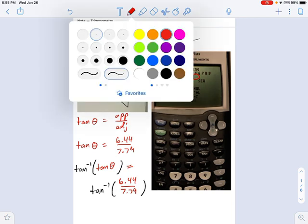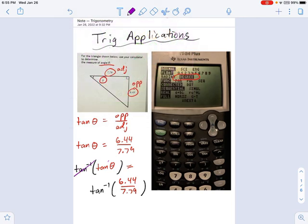Those tangents are going to cancel out. The inverse tangent of tangent - those cross out, and we get this as our final equation: theta equals the inverse tangent of 6.44 over 7.79.